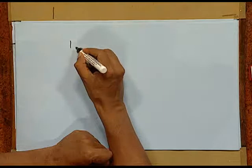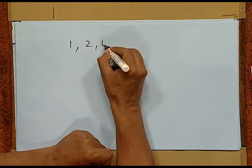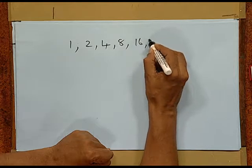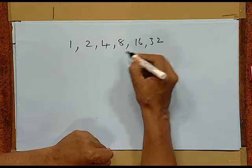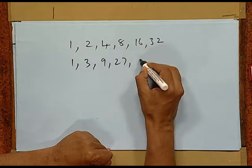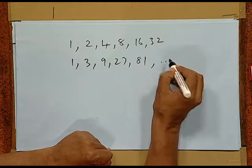Look at this: 1, 2, 4, 8. Can you get the next term? Yes, it is 16, then 32. What is happening here? Every term is double of the previous term. Similarly, in another sequence, every term is triple of the previous term. So, any sequence in which the terms progress with a constant ratio is called geometric progression.